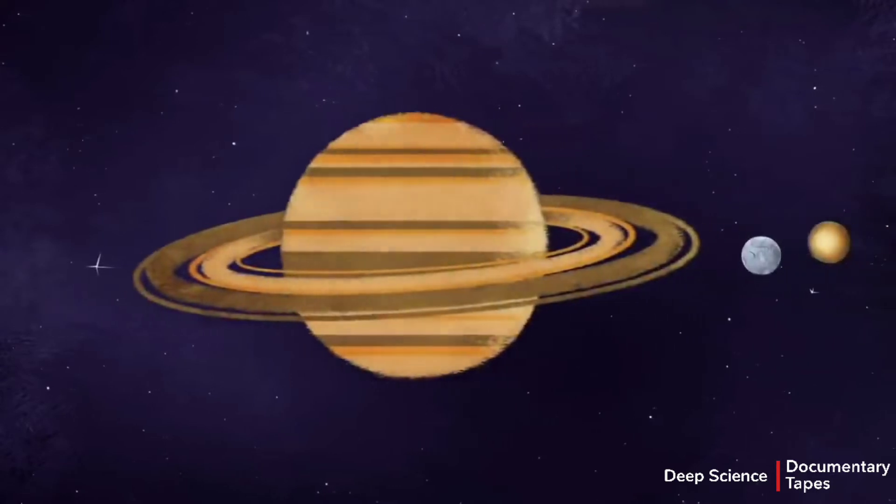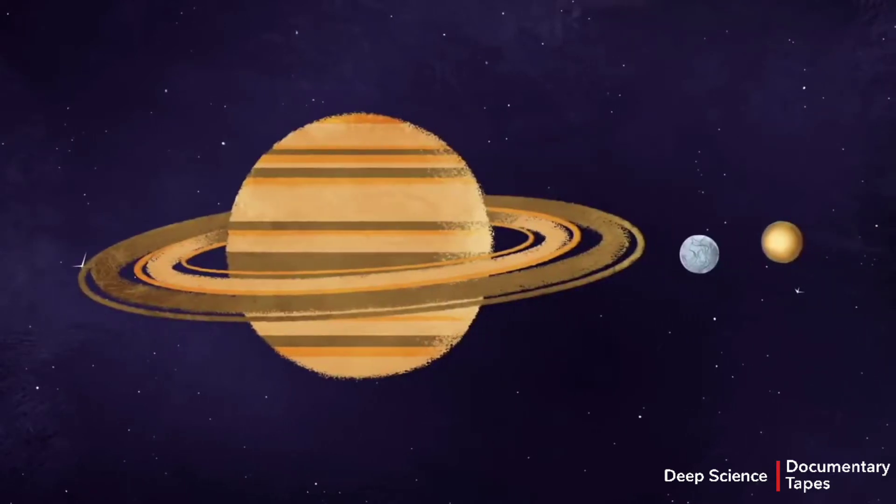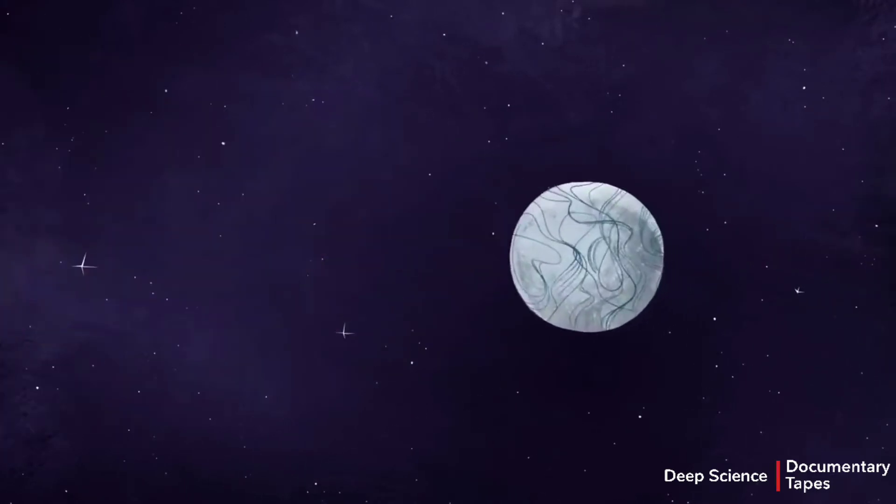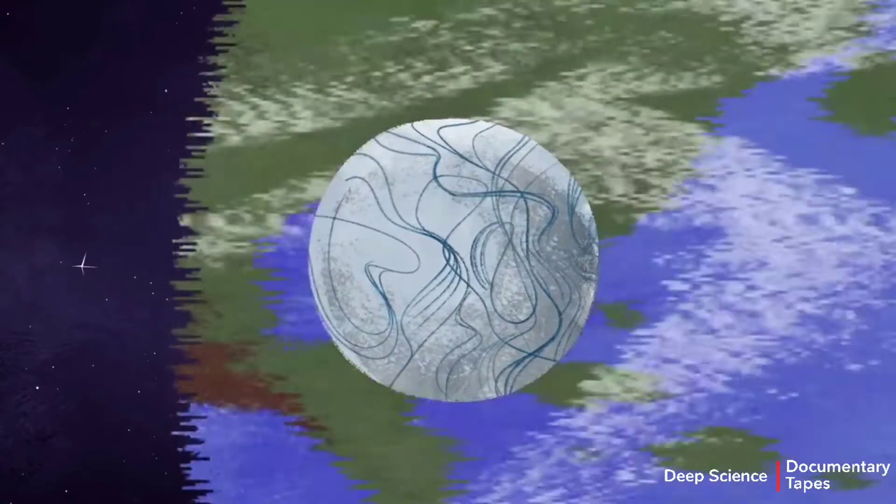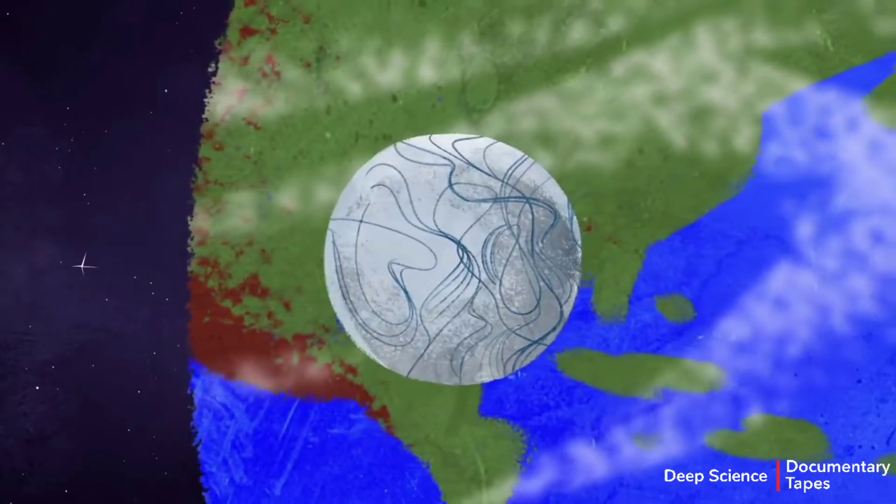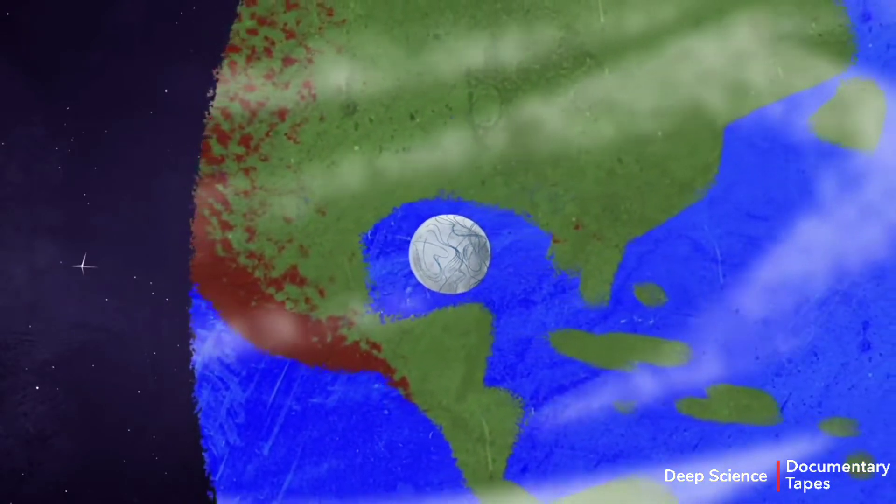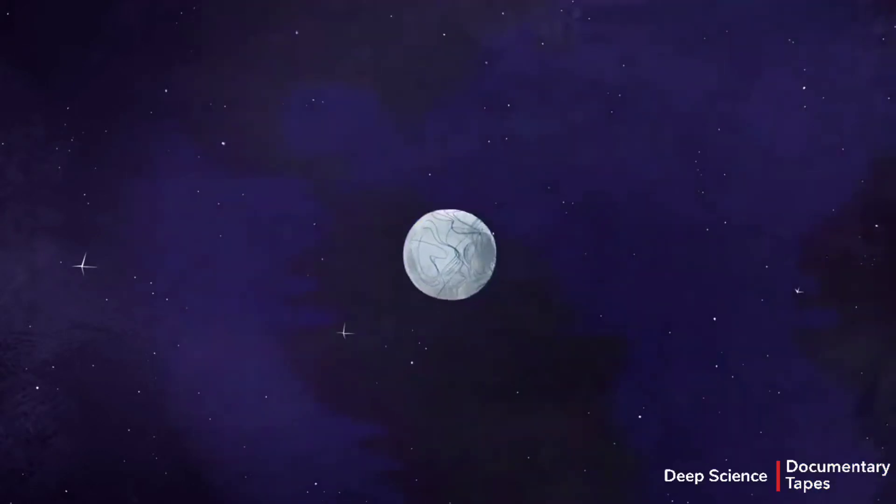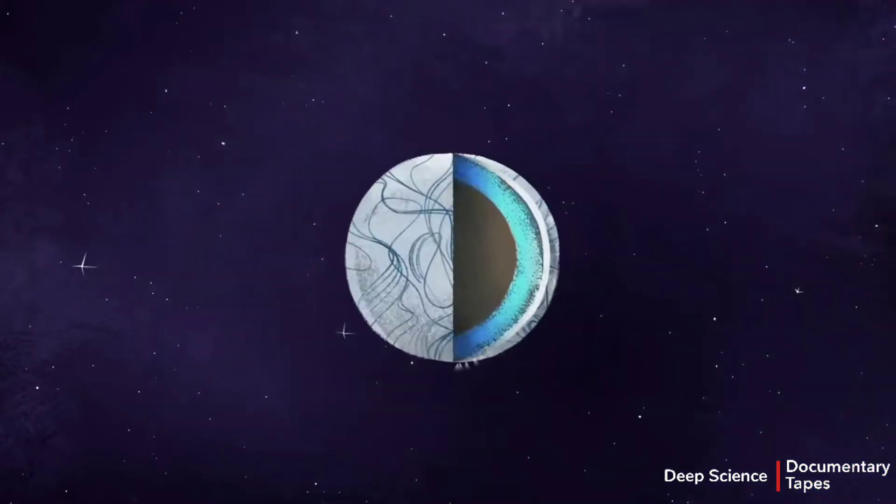Like Jupiter, Saturn also has moons that might have the right conditions for life. For instance, Enceladus is a tiny ball of ice that's small enough to nestle within the surface area of the Gulf of Mexico. Similarly to Europa, it likely contains an ocean deep under the ice.